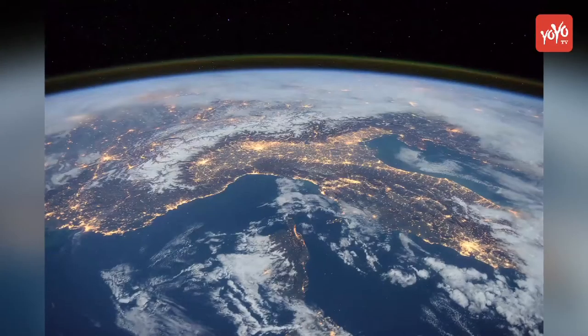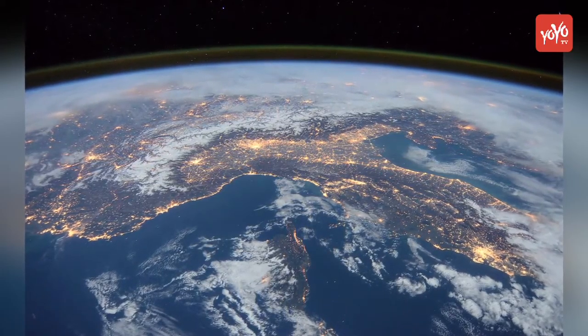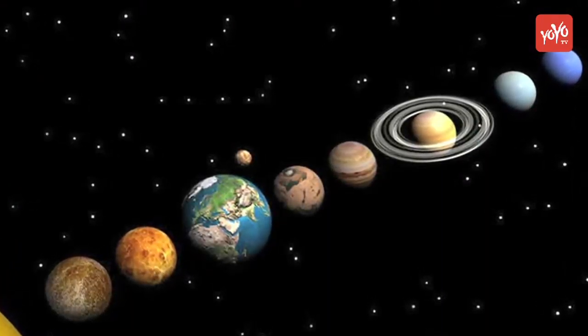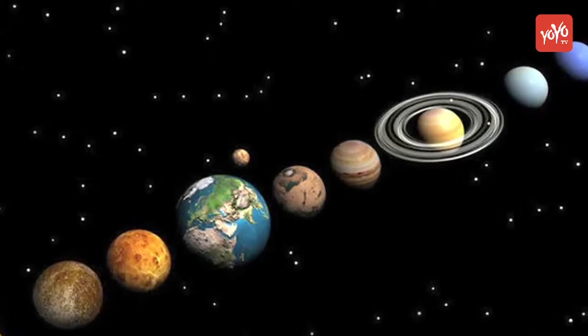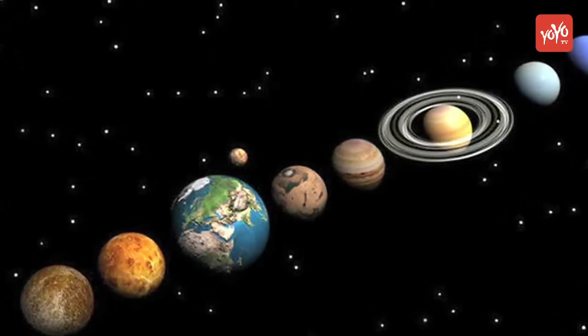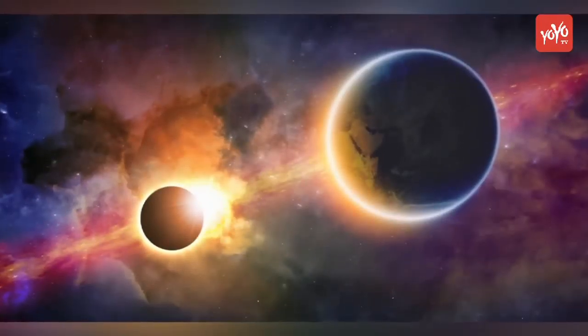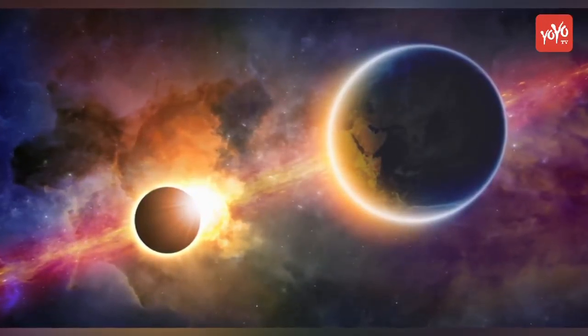When scientists search for planets that could sustain life, they are basically looking for a planet with nearly identical properties to Earth, Cain said. Like Earth, the planet would have to exist in a sweet spot, often referred to as the Goldilocks zone where conditions are just right for life.